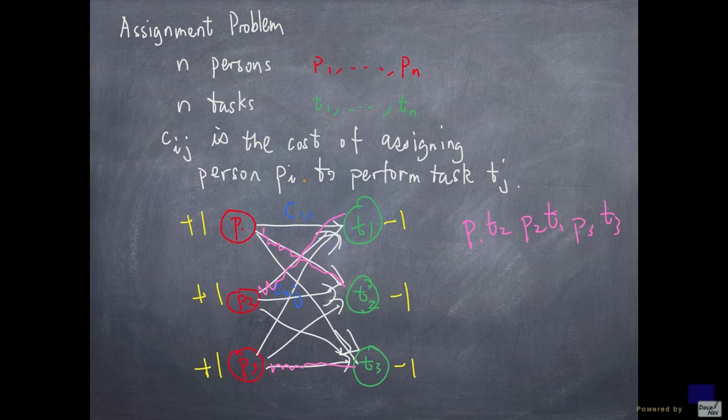Conversely, let's take a feasible flow whose entries are 0 or 1. Well since only one arc out of each person can be set to 1 in such a solution, then what we end up with is if we look at all the arcs that have value 1, it will give us an assignment. And the cost of that assignment is the same as the cost of the flow.